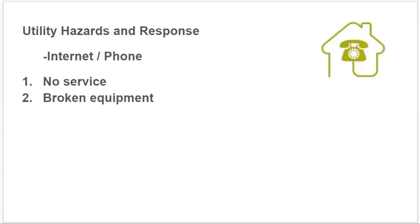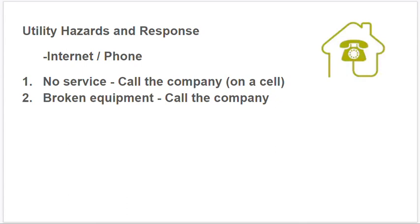For internet or phone service, the main issues are no service or broken equipment. If you have no service, call the company — you'll probably need to use your cell phone. If you have broken equipment, also call the company. In both cases, have the person in charge of the internet service — whether in your family or at your meeting place — handle that call.